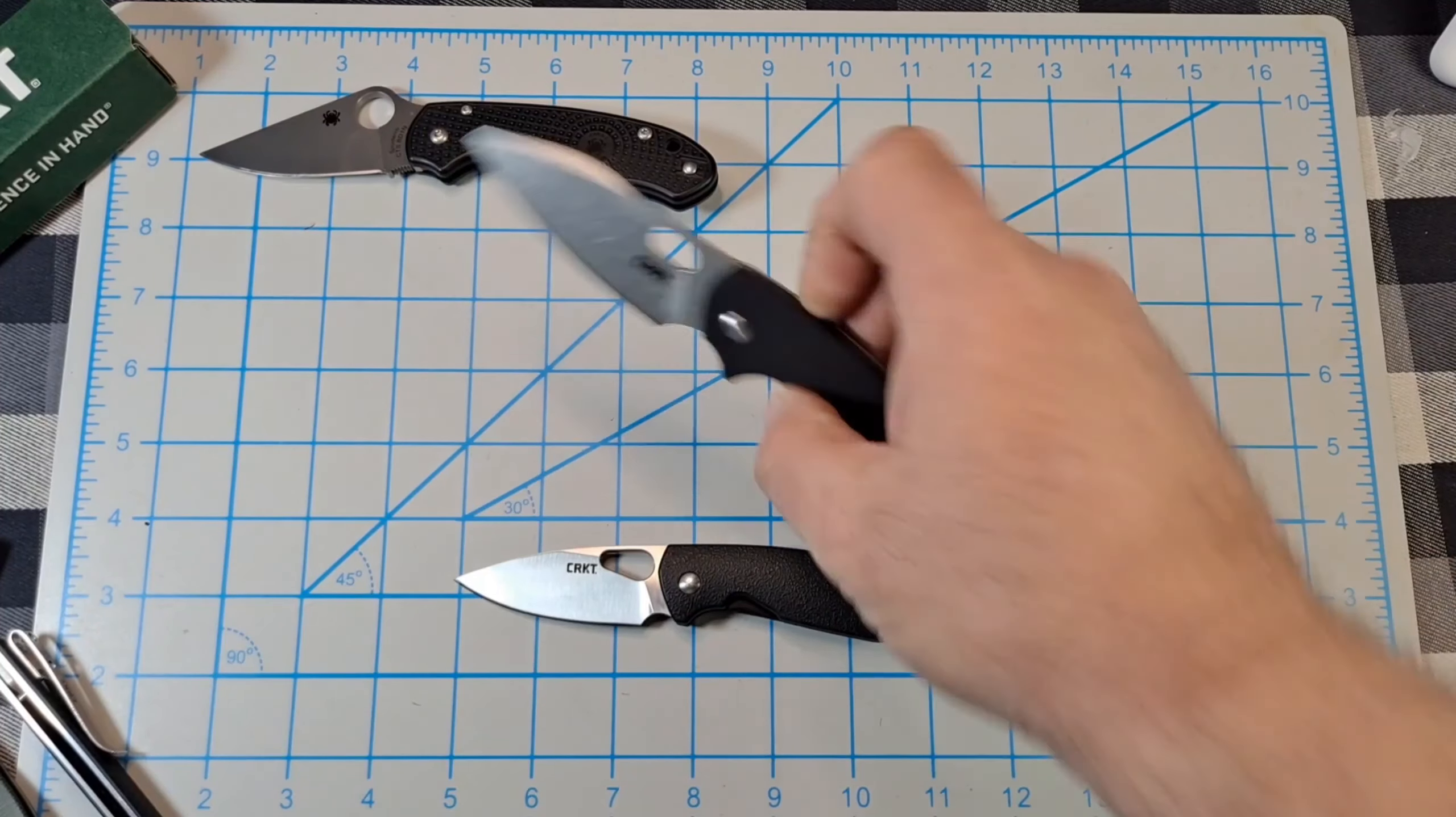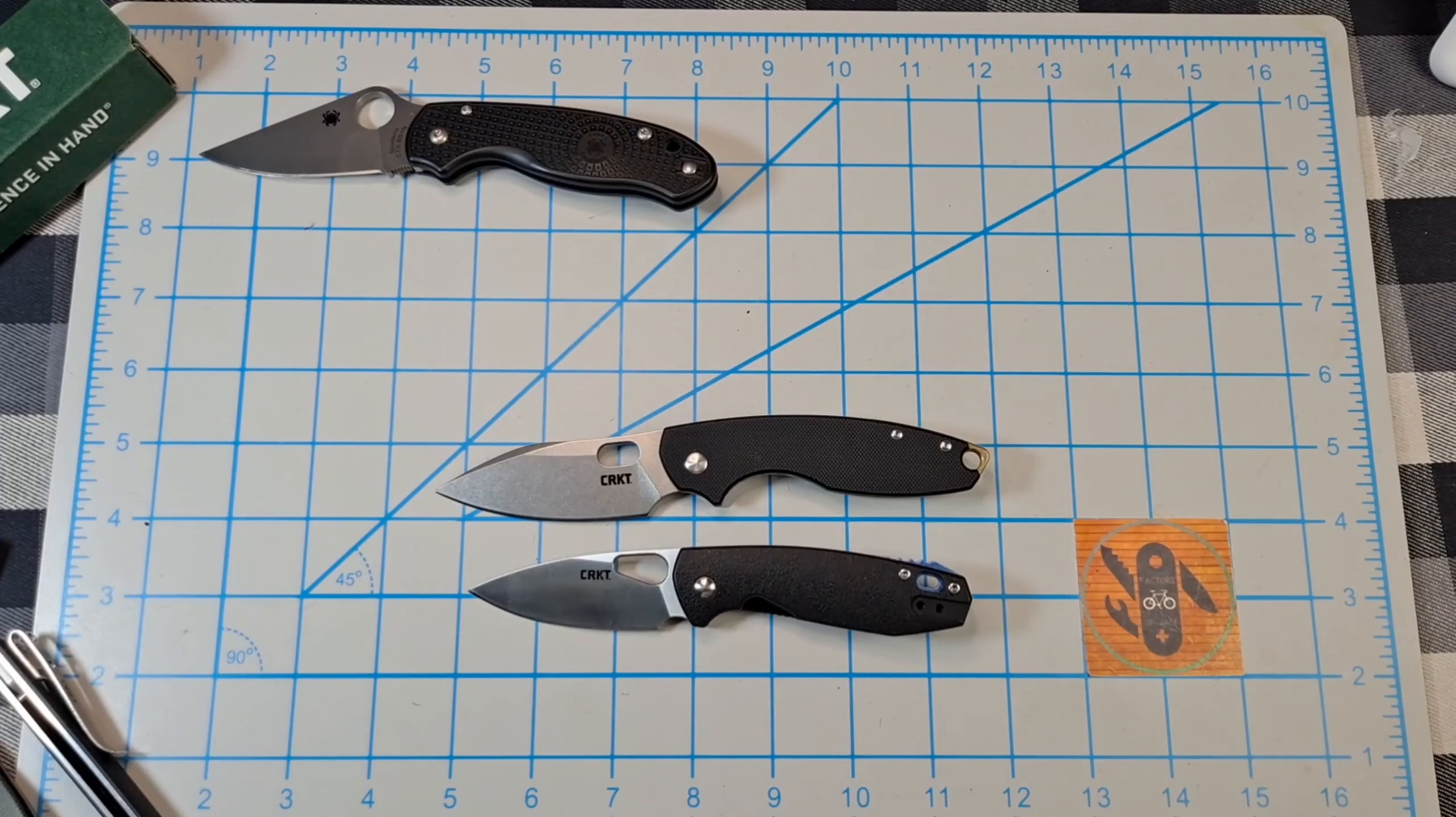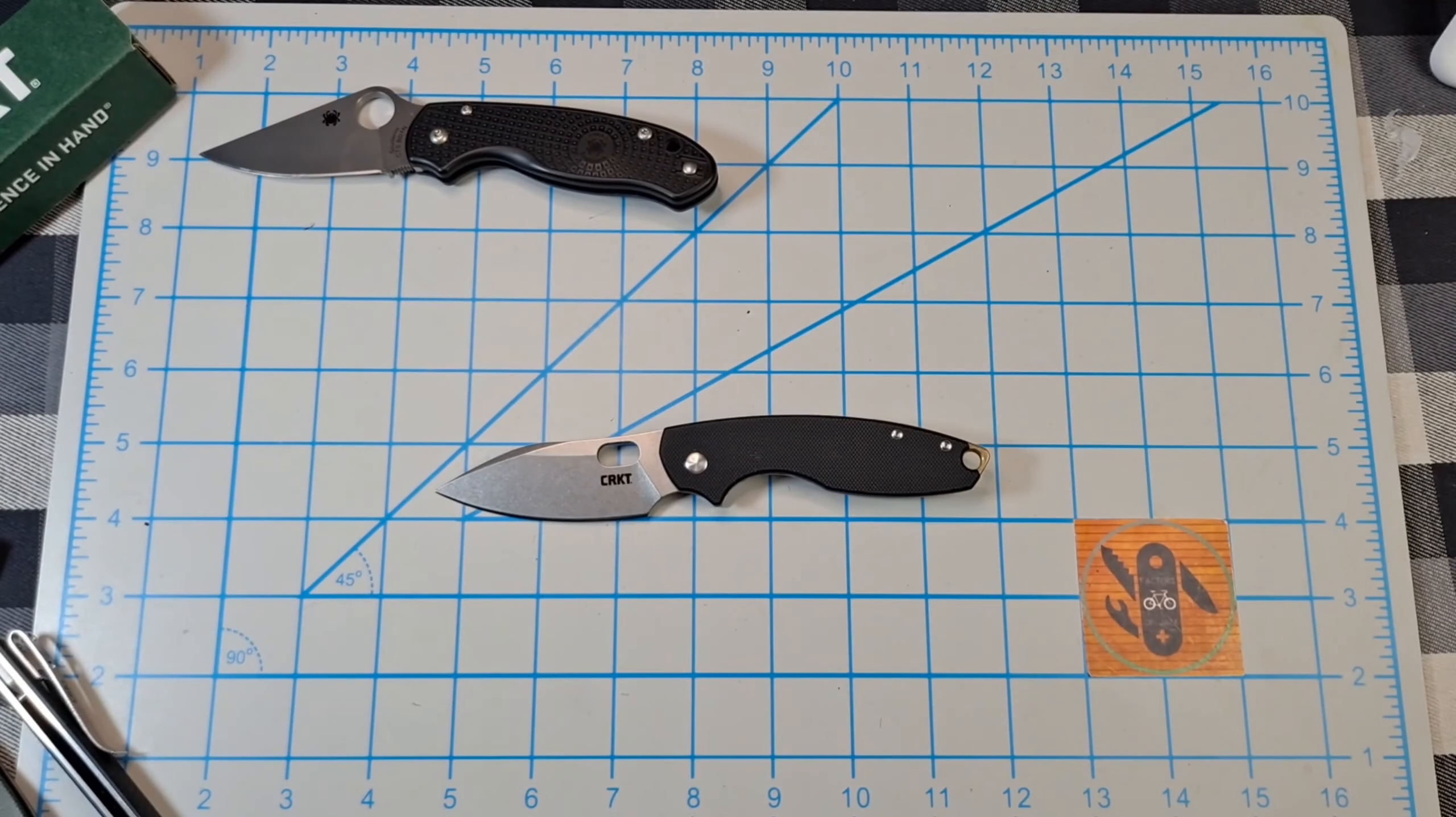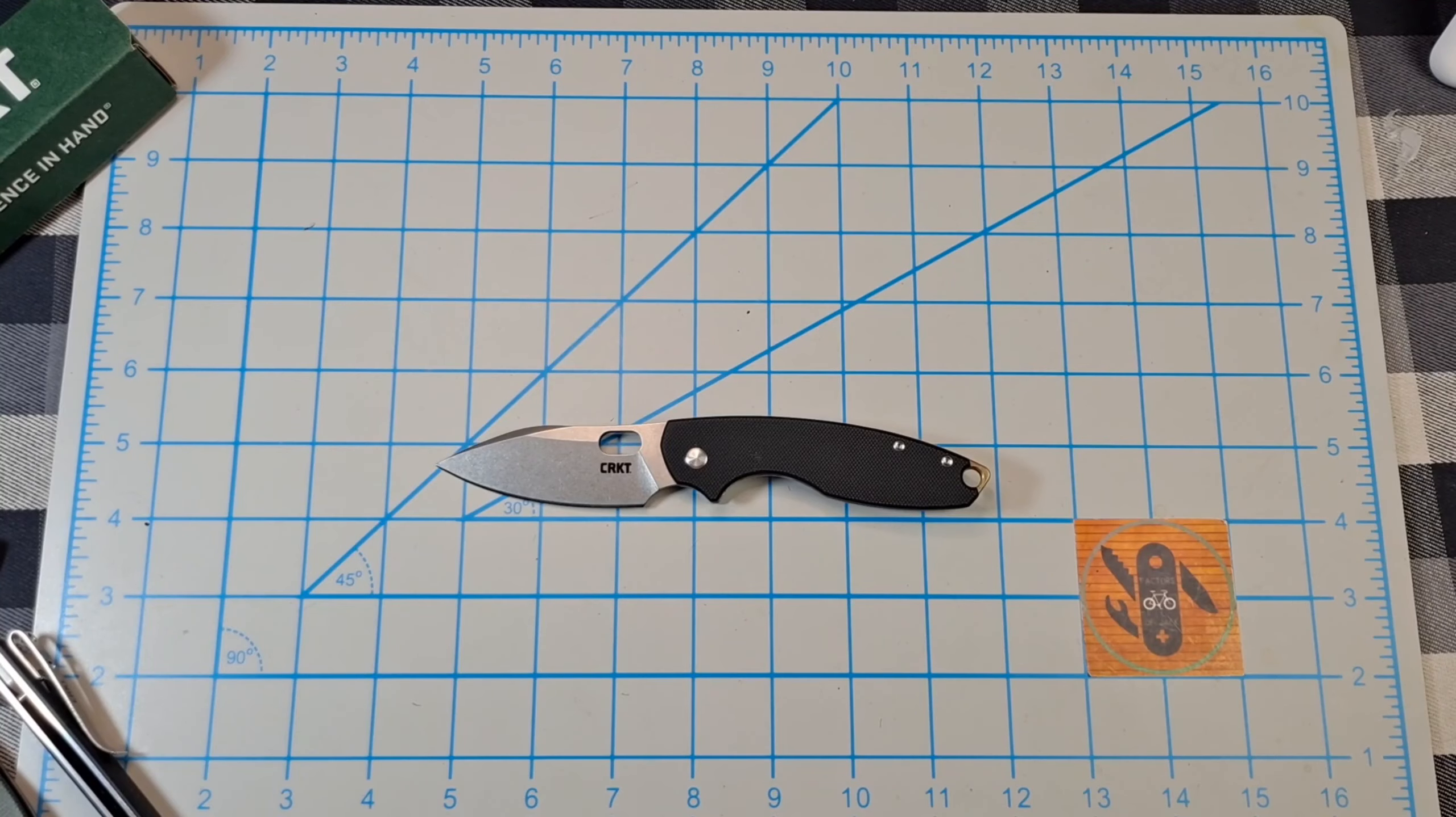I think the best match-up is actually the Para 3 Lightweight as far as size comparisons. So let's take a closer look at this.